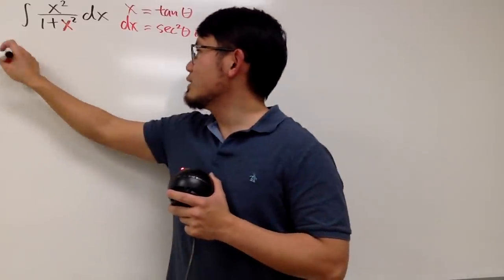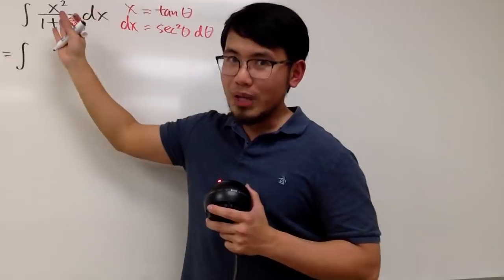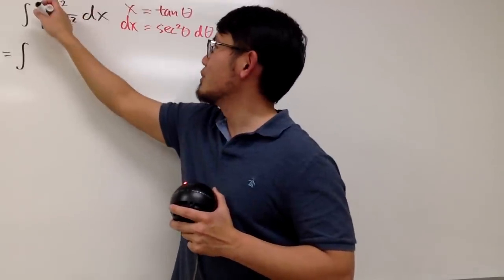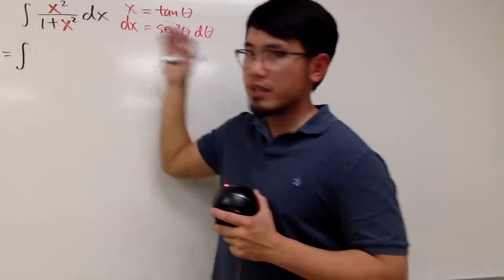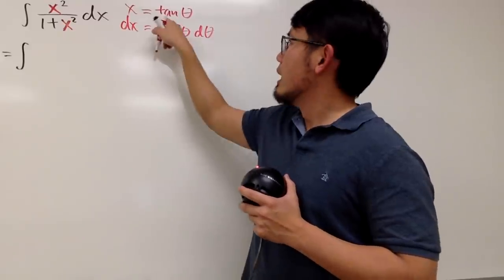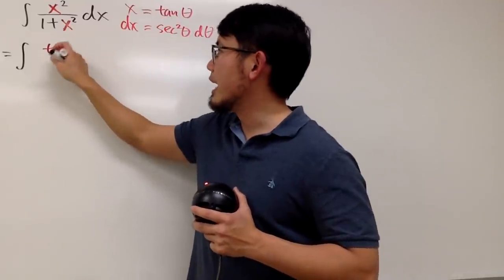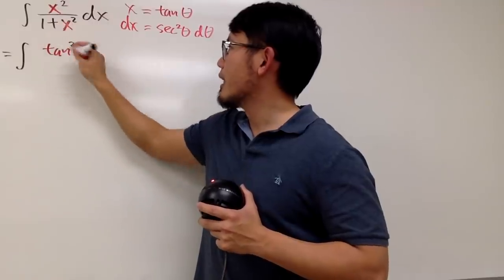So we see that this right here is just the integral. On the top, we have x squared as well. So be sure you take this right here to the theta world as well. Now, x is tangent theta, so the top will be tangent squared theta.